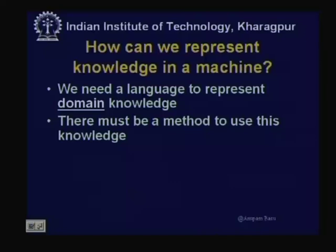Suppose there is some language that has represented some knowledge. What is the use of that knowledge unless there is somebody who can take the help of it, understand the language in which the knowledge has been expressed, and therefore use it? If no one can use it, the knowledge is of no significance. Hence we must first have a language, but also there must be a method that can use this knowledge — a viable method that can be executed in a machine so that it can read the language, understand it, and act according to the knowledge that has been expressed in that language.